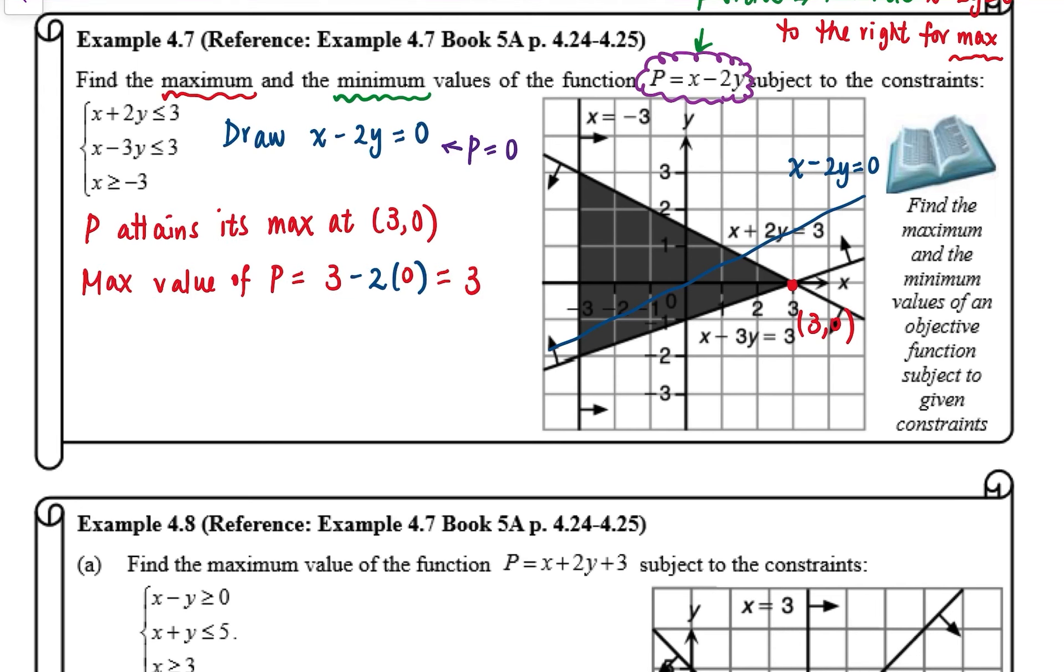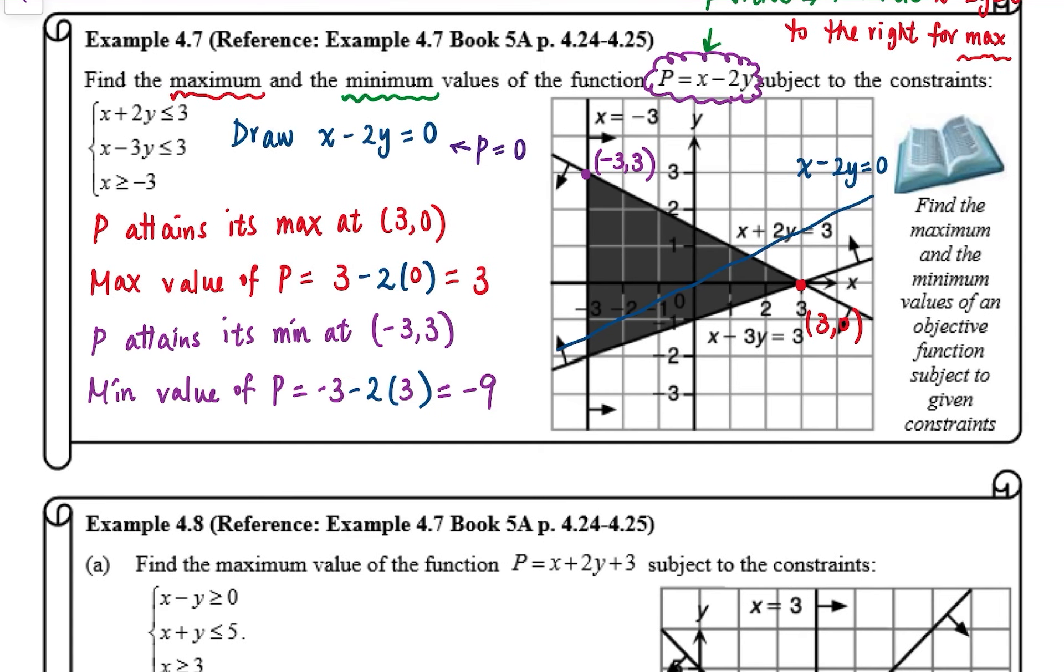Likewise, we will be translating the straight line x - 2y = 0 to the left for minimum. We can also check the values of P at the three vertices, and this is the fastest possible method.